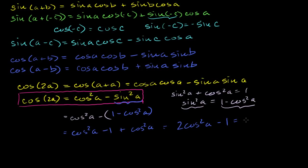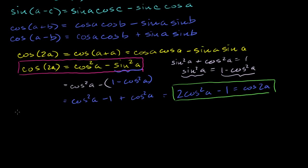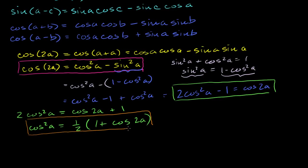Now, what if I wanted to get an identity that gave me cosine squared of a in terms of cosine of 2a? We can just solve for it. Adding 1 to both sides of that equation gives 2 times cosine squared of a equals cosine of 2a plus 1. Dividing both sides by 2, cosine squared of a equals one half times (1 plus cosine of 2a). This is sometimes called the power reduction identity.